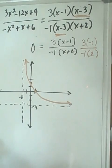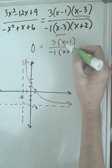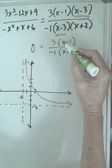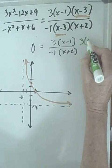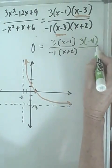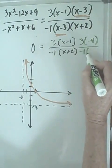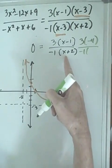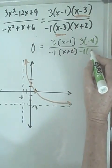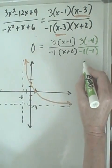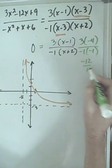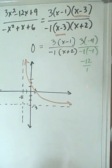If we stuck negative 3 into our equations, instead of getting this, we're going to now put negative 3 in here. 3 times negative 3 minus 1, that would be 3 times negative 4, over negative 1. We put a negative 3 in here. Negative 3 plus 2 is negative 1. Then, we would get negative 12 over positive 1, which would be negative 12,